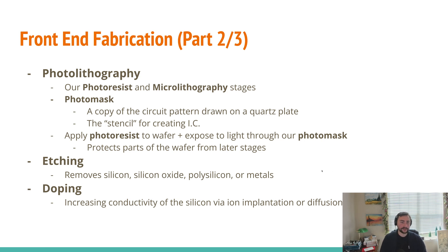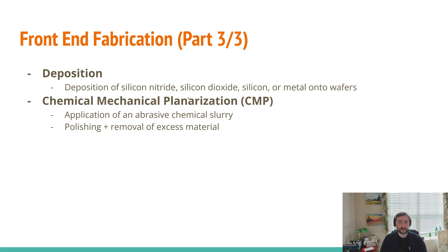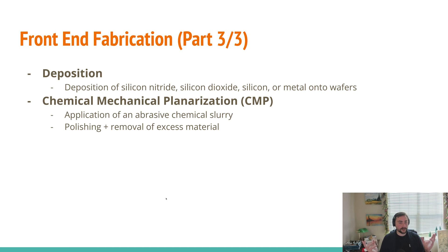The same is true for back end of line processes. In our back end of line processes, we go from a wafer covered in transistors to having those transistors connected into our circuits. We have deposition, where we're depositing things like silicon nitride, silicon dioxide, silicon, or metal onto our wafers. Then we have chemical mechanical planarization — CMP — which means we put a chemical slurry on our wafer and polish it, both to make sure our wafer is flat and to remove any excess material from the previous process steps. That's basically our front-end fabrication steps.